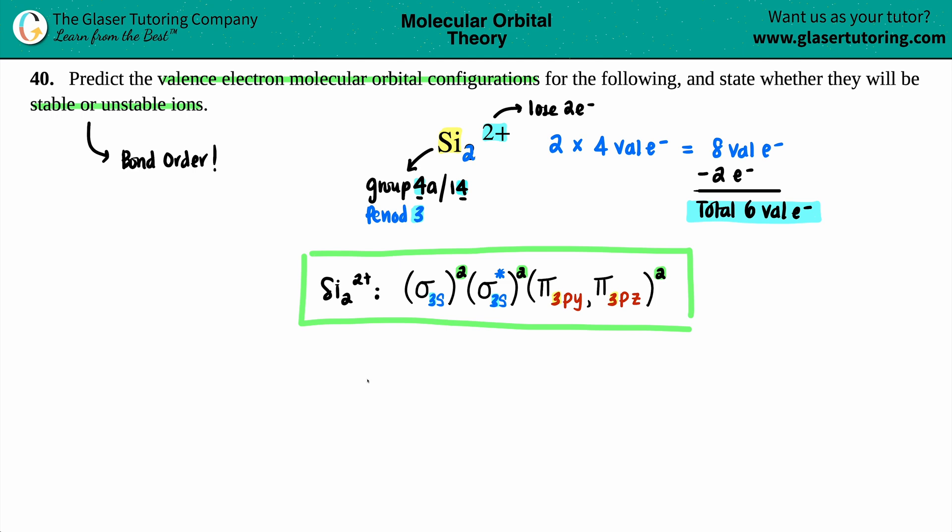The formula for bond order is: bond order equals the number of total bonding electrons minus the number of total antibonding divided by two. The ones with stars are your antibonding. If you do not have a star, those are your bonding. How many total bonding electrons do we have? This one is bonding, so I got two here, and these are bonding, I don't see any stars, so that's two. Two plus two is a total of four electrons. The other one, this is your antibonding because there's a star, so I have two electrons here.